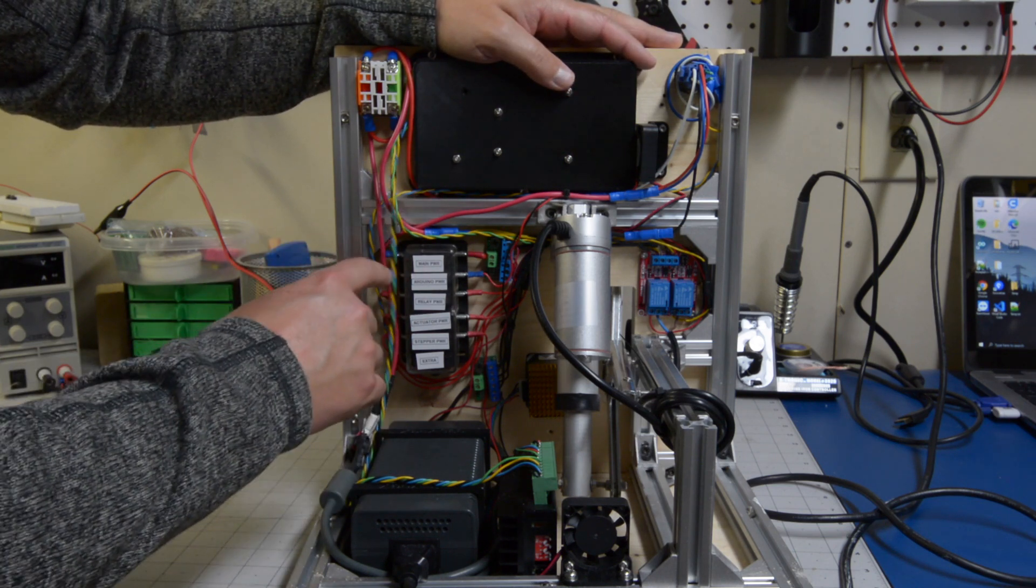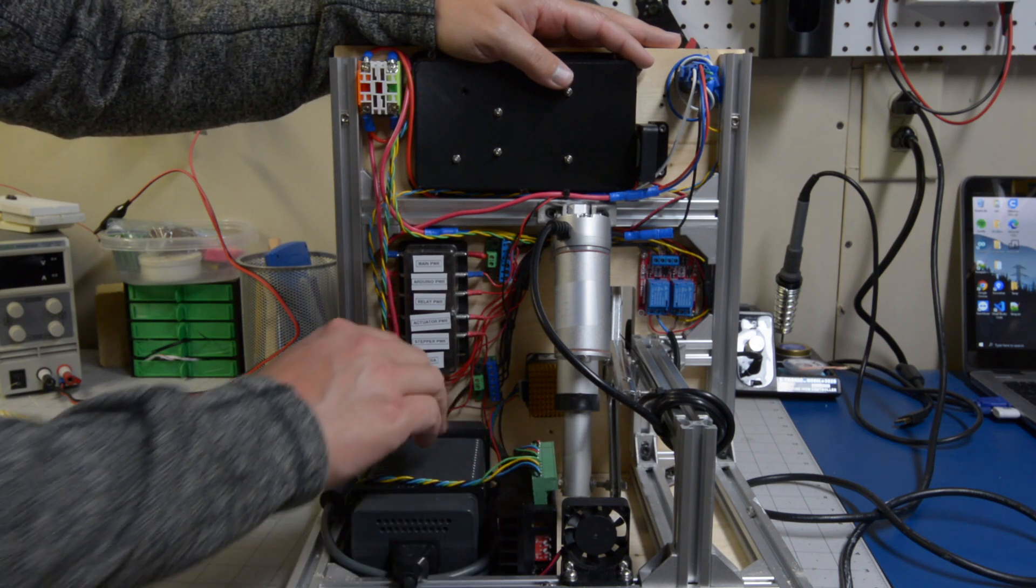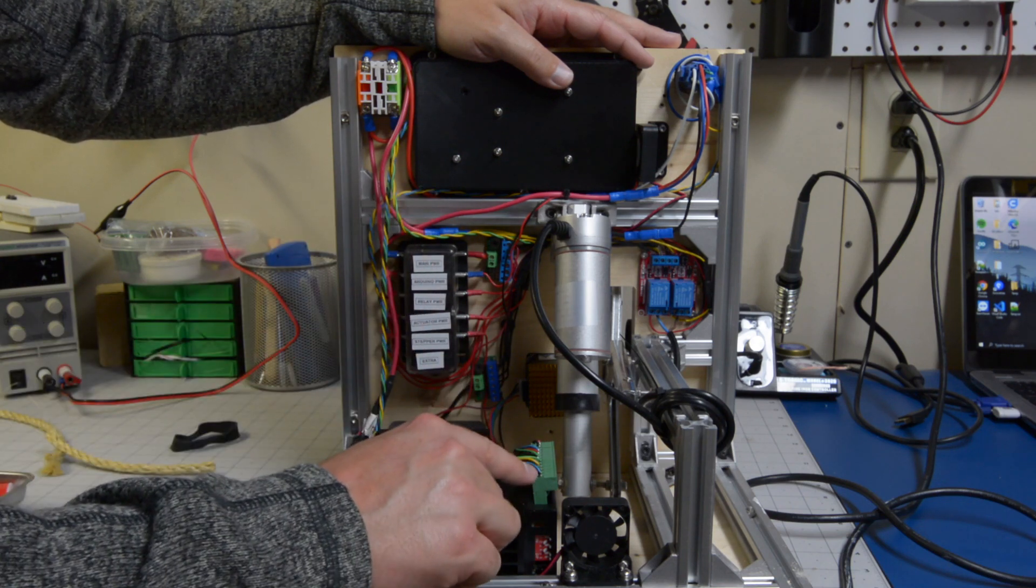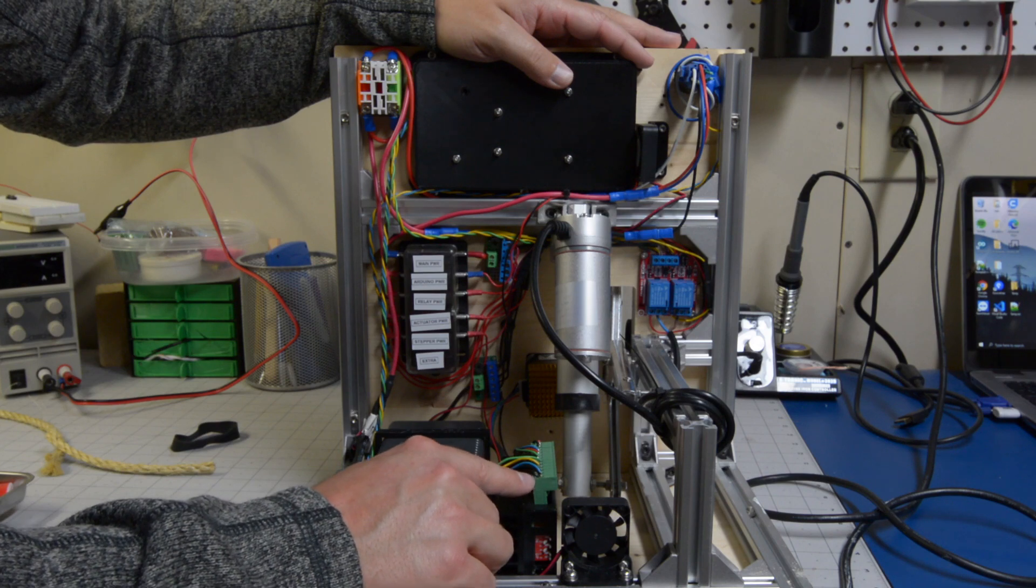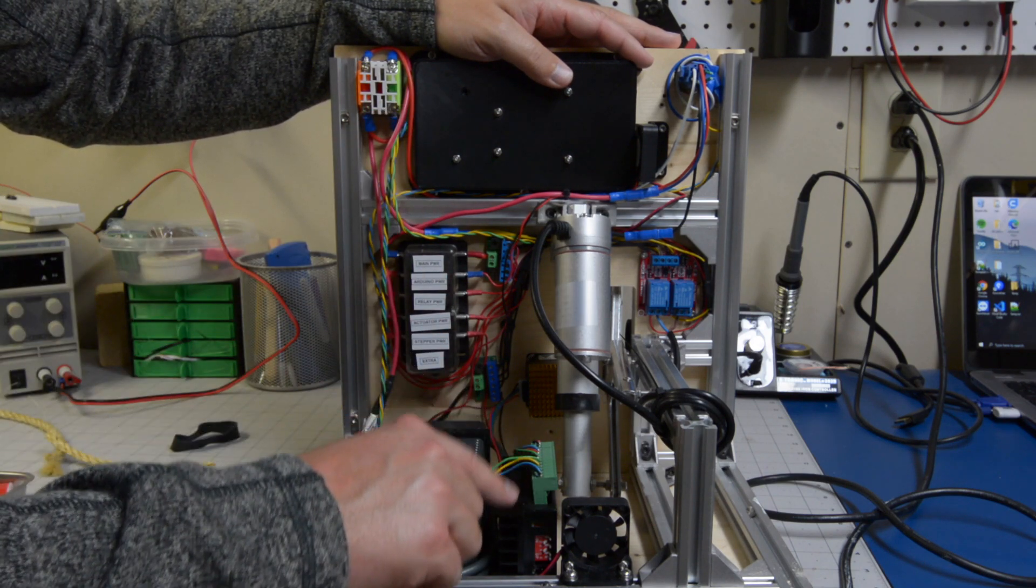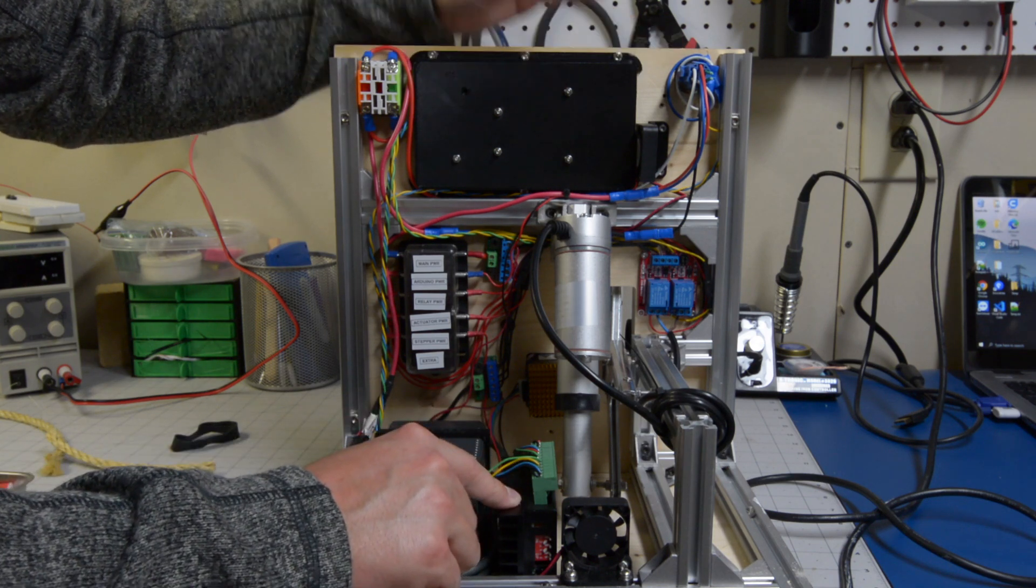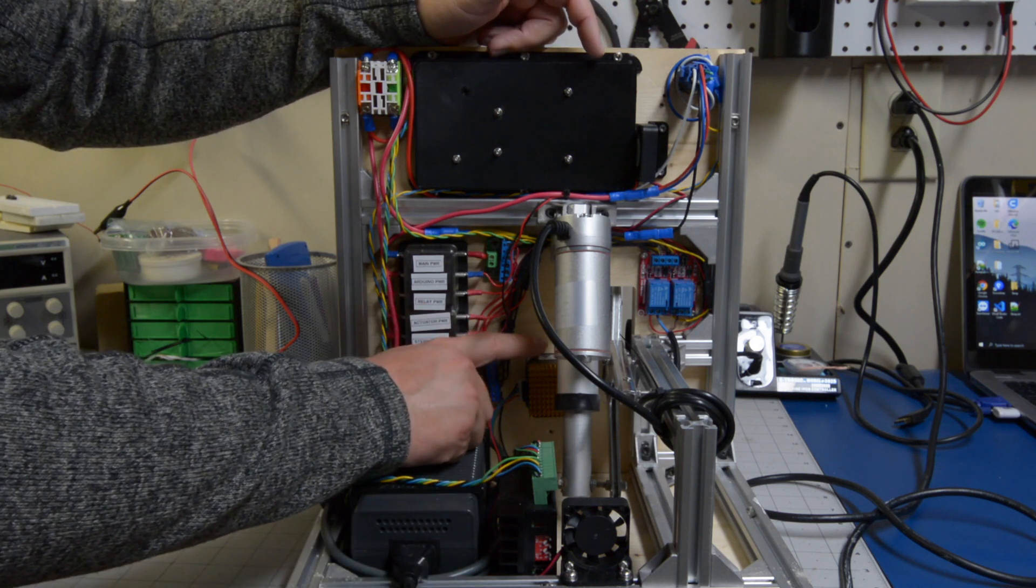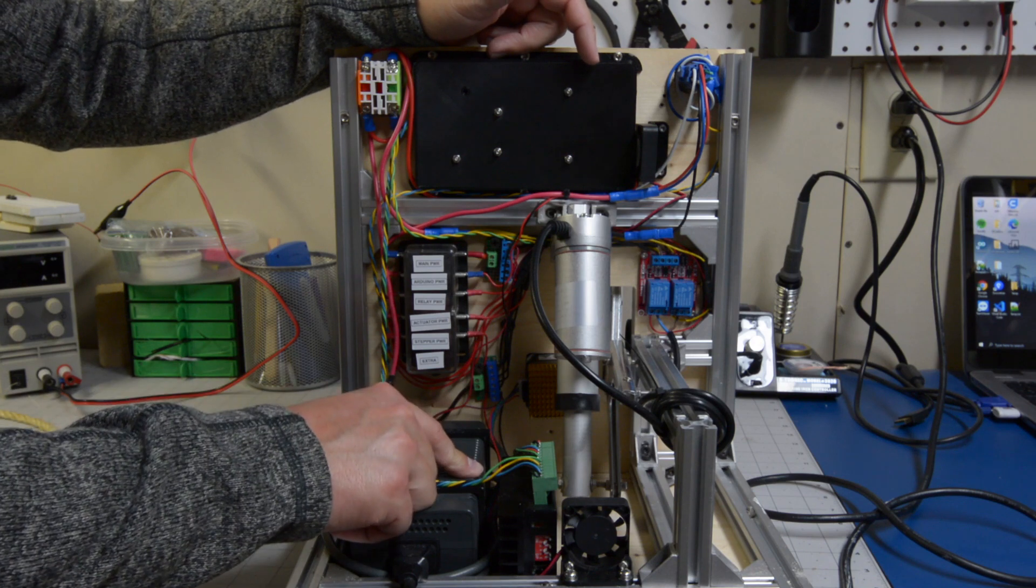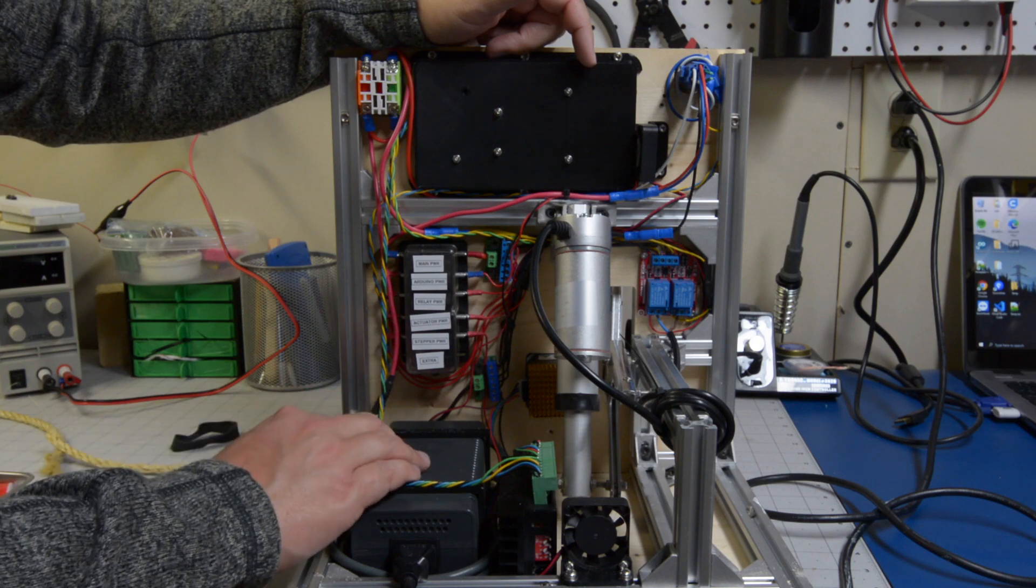After that the TB6600 is our stepper motor driver which drives a NEMA 17 stepper motor. This takes in direction, pulse width modulation and enable pin from the Arduino Mega. So the Arduino will enable or disable the stepper motor driver. It will send it a PWM of the duty cycle and frequency which will change the speed and torque of the stepper motor and also the direction in case we want to reverse the wheel in the future for any future functionality that we would like to add.